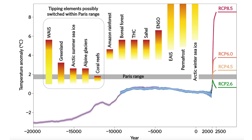Possibly, probably even, the West Antarctic ice sheet tipping point has already been crossed. But it is critical to keep warming at as low a level as possible in order to prevent further tipping points being crossed and further irreversible large-scale changes in the climate system being triggered that will have a detrimental effect on humanity.